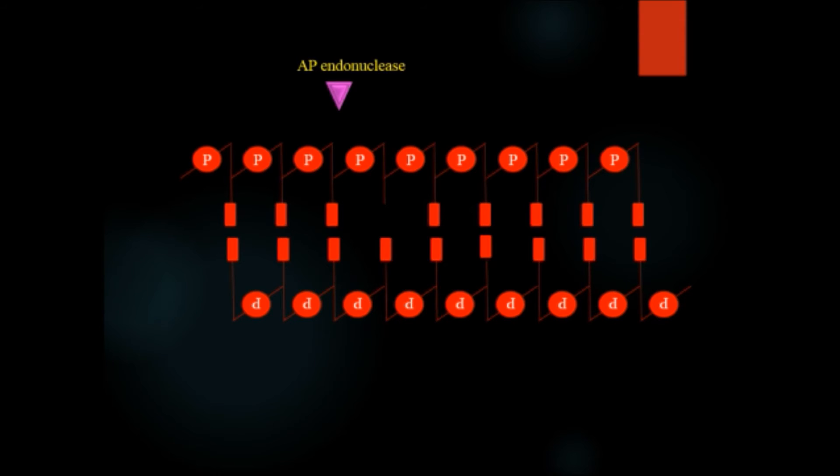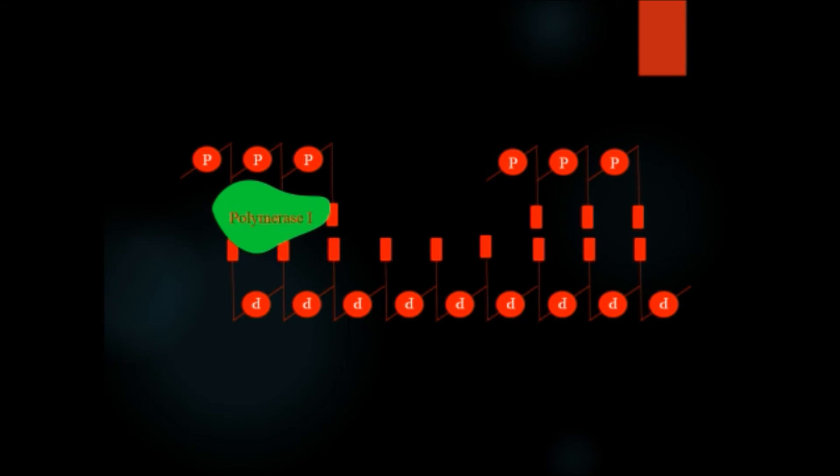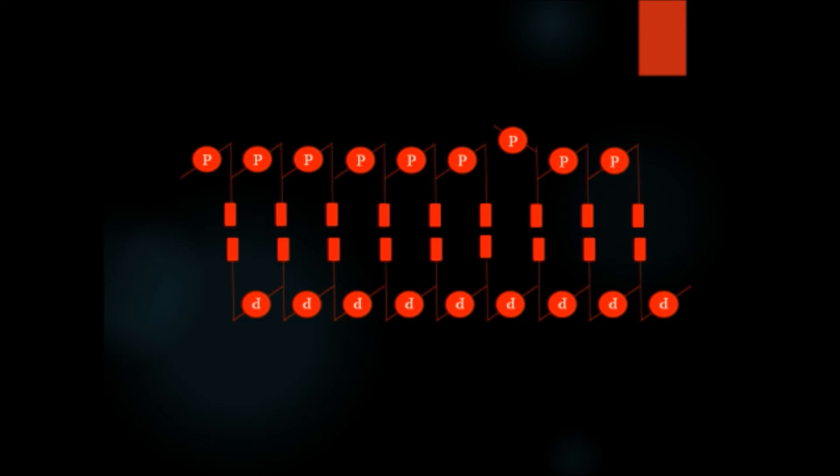Let's see how it happens. Here in the rectangle, this is the base that needs to be repaired. First of all, DNA glycosylase removes this damaged base. But it is not possible that only this base will be replaced by another one. So then after, AP endonuclease will cut at that site and then it will be removed. After that, polymerase 1 will replicate that portion of the DNA, and then the nick is sealed with the help of DNA ligase. That's how this process continues.